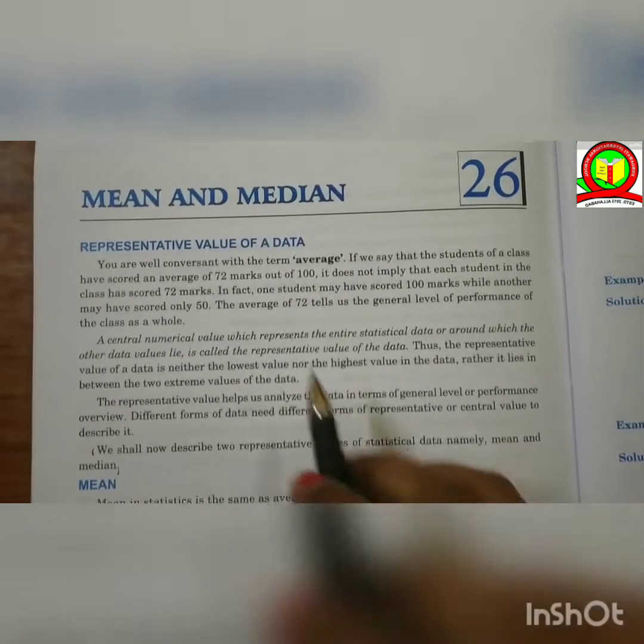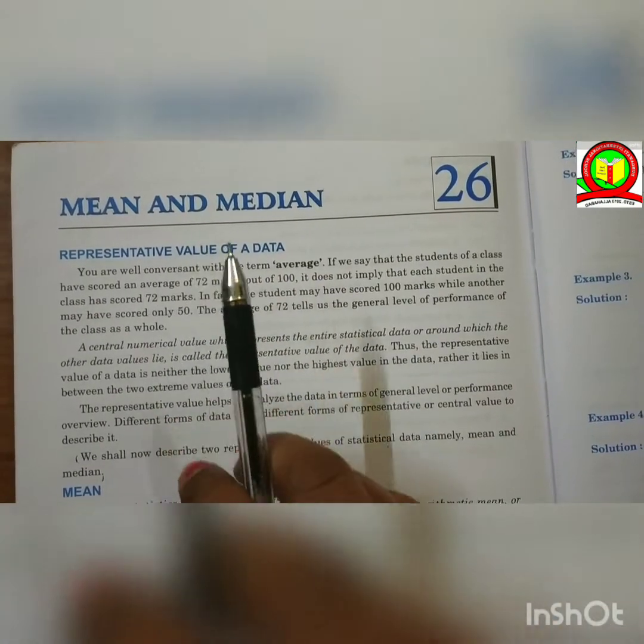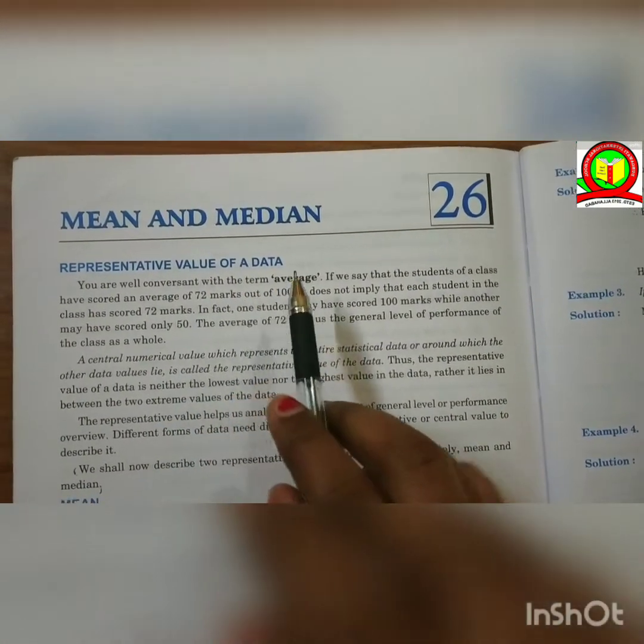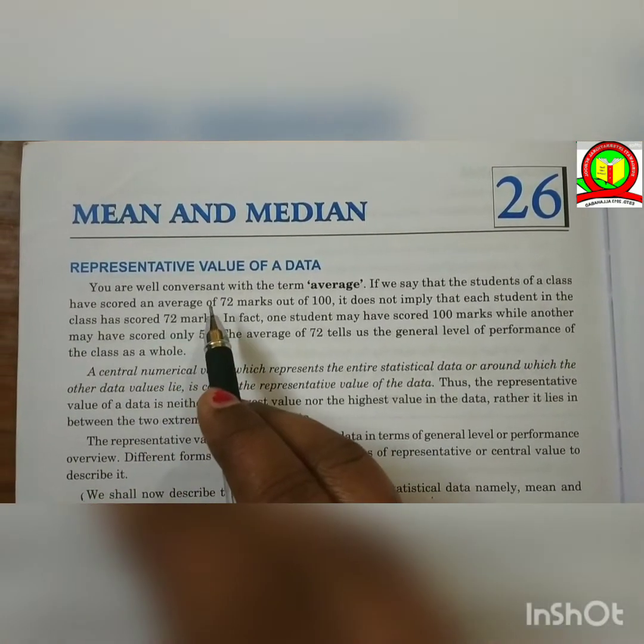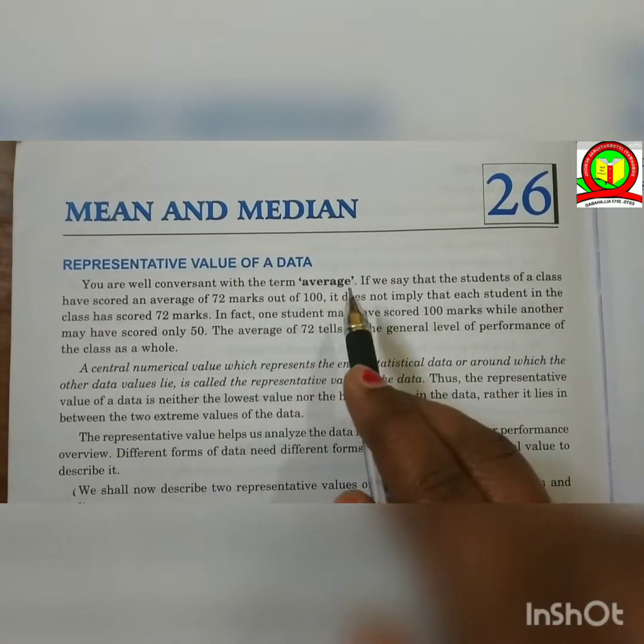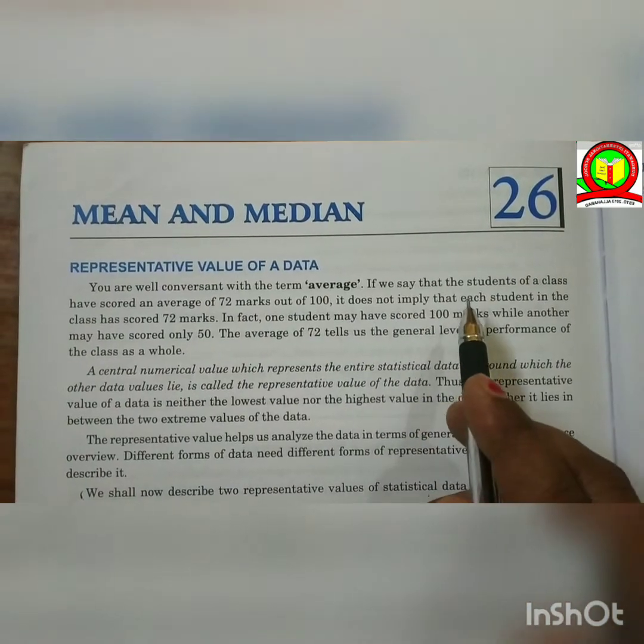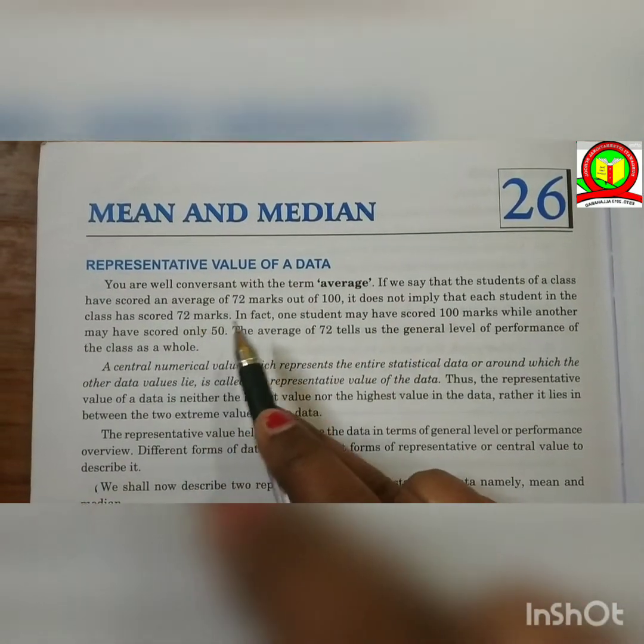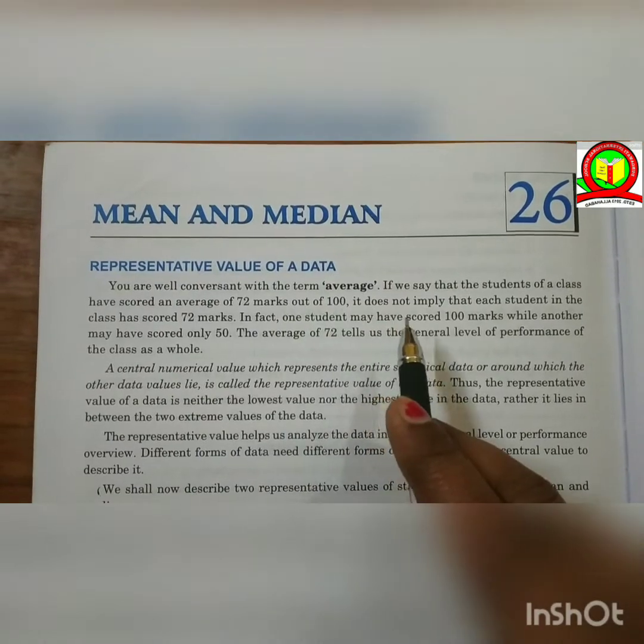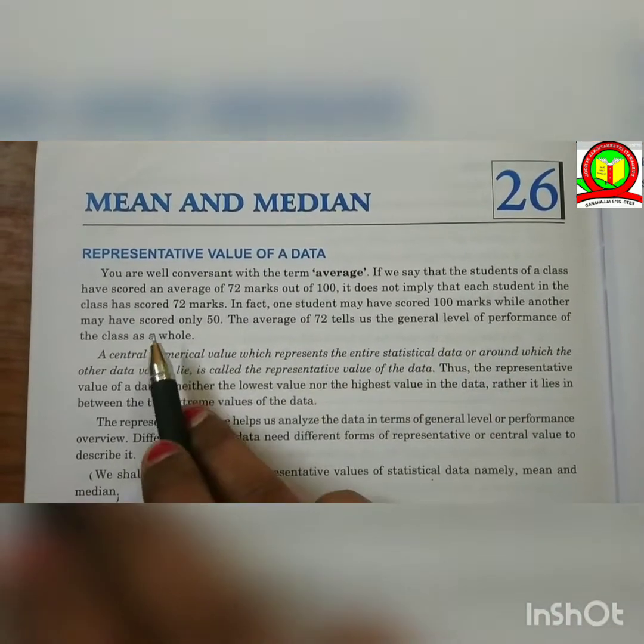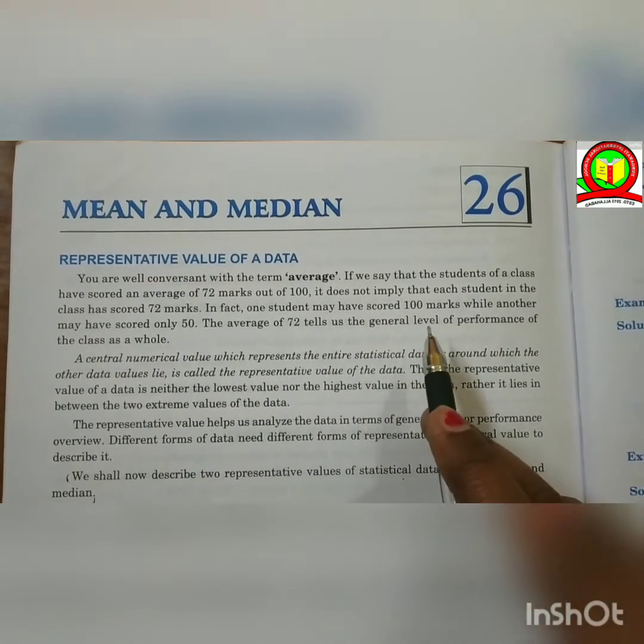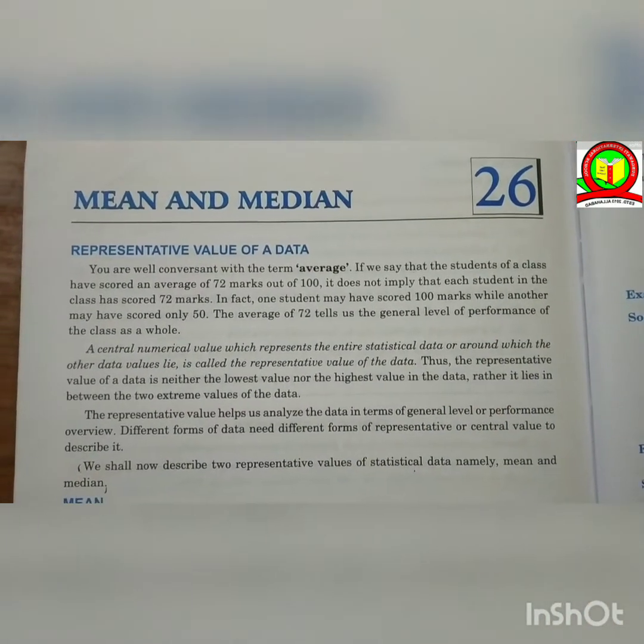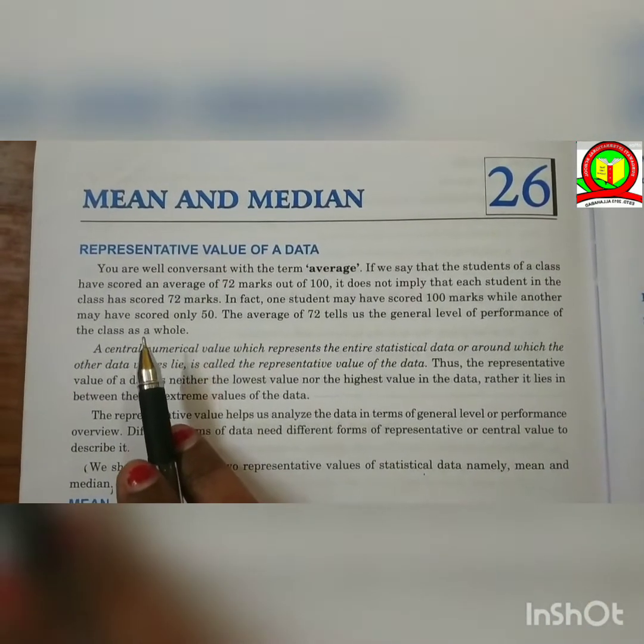Representative value of our data. We are all well conversant with the term average. If we say that the students of a class have scored an average of 72 marks out of 100, it does not imply that each student in the class has scored 72 marks. In fact, one student may have scored 100 marks, while another may have scored only 50. The average of 72 tells us the general level of performance of the class as a whole.